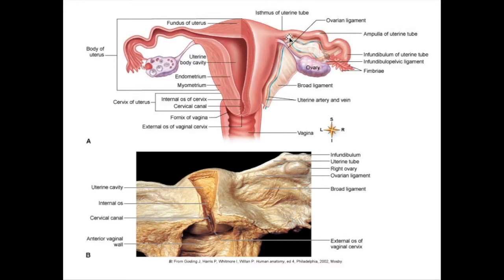A tubal pregnancy can actually be quite dangerous. It could cause a rupture of the uterine tube. It would be extremely painful, so the woman would definitely be going to her physician for help. At that point, they would probably take a scan and find that it's a tubal pregnancy. Now, if a woman wants to — you've probably heard of the concept of tying your tubes. Just as a vasectomy is a slicing of the vas deferens, a tubal ligation is a slicing of the uterine tube.